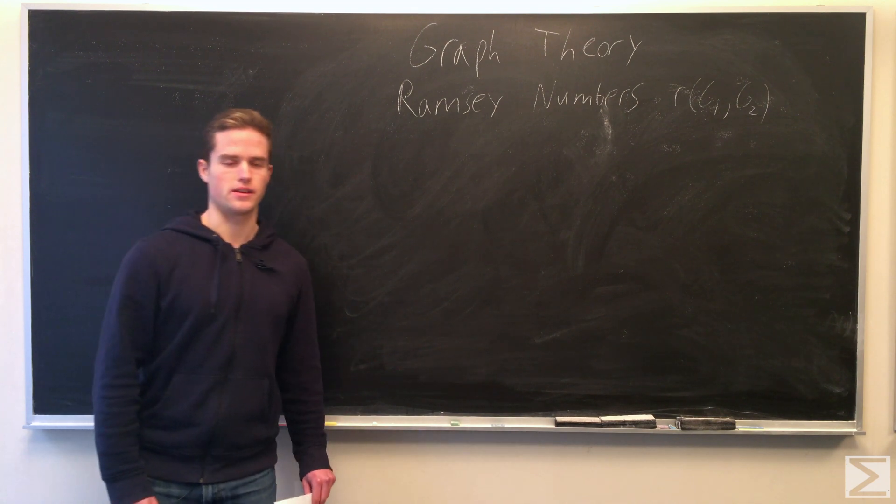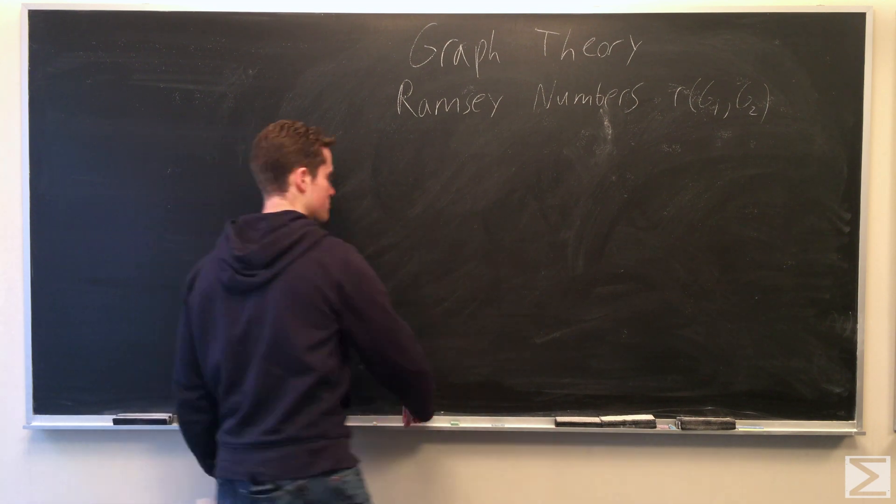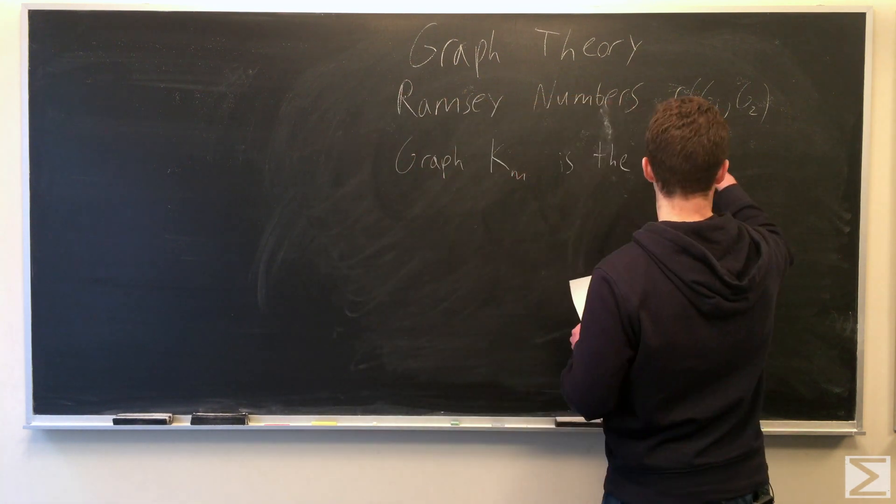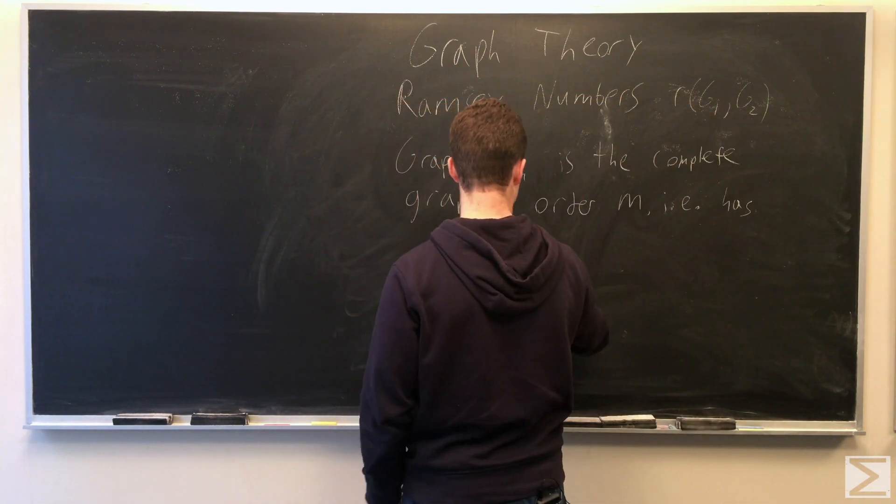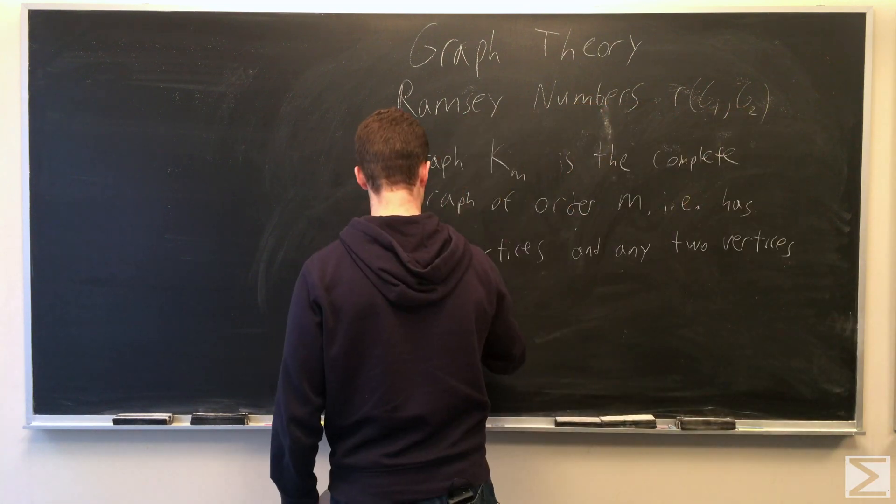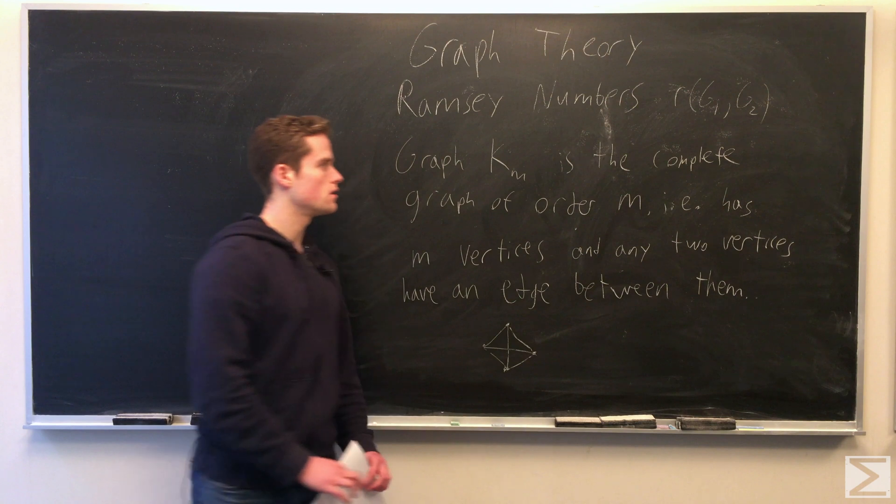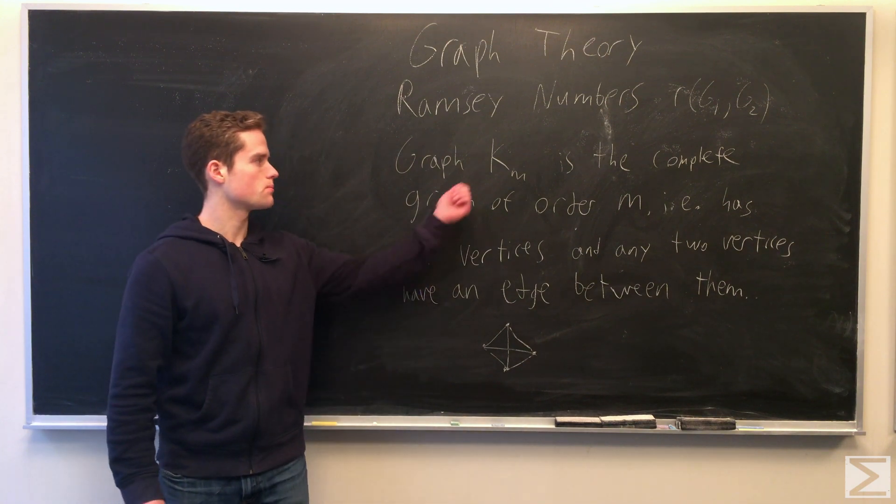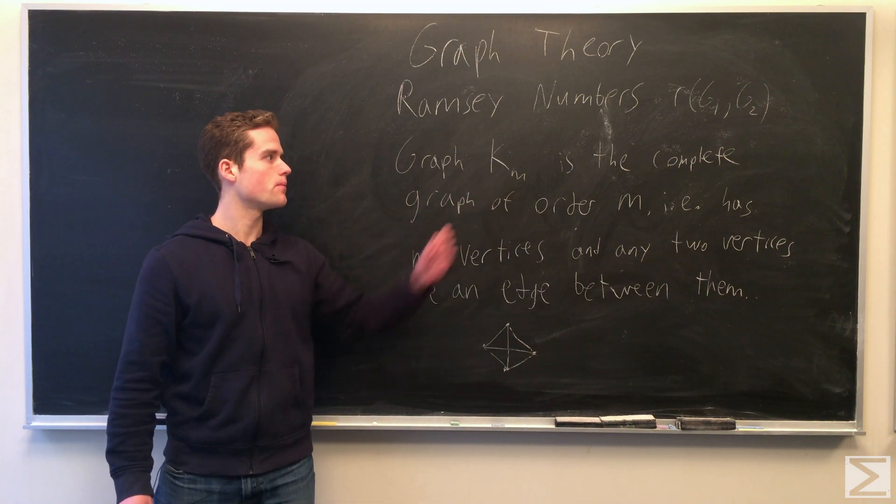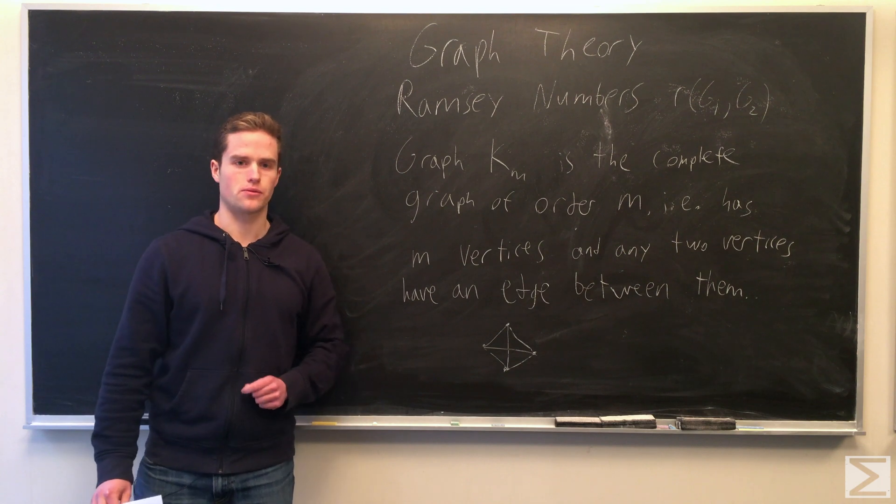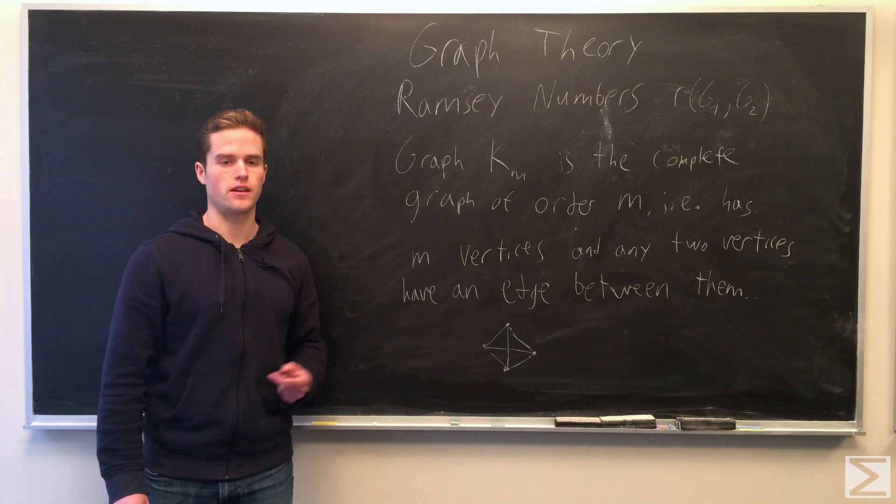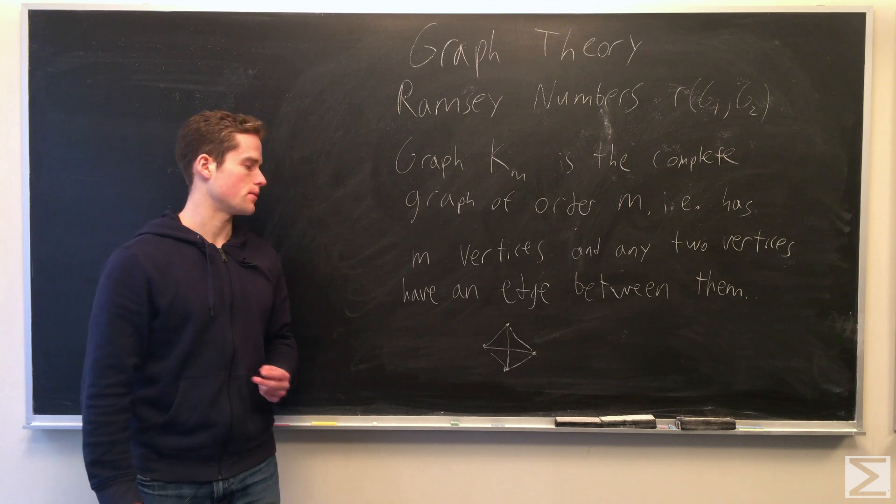So first we're going to define the complete graph. The complete graph, we're going to denote k subscript m. The complete graph over m has m vertices and any two vertices in the graph have an edge going between them.